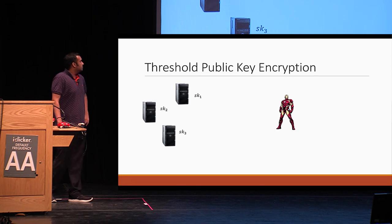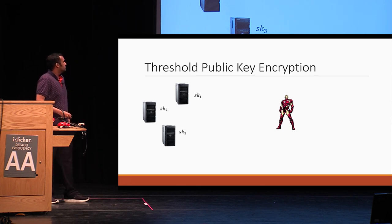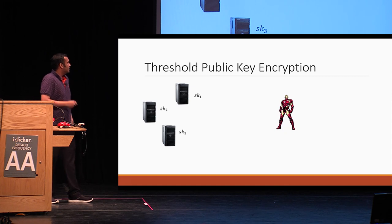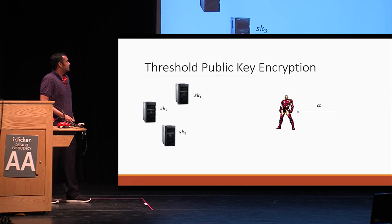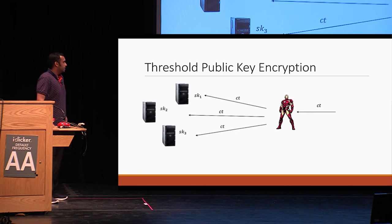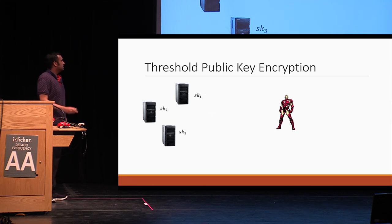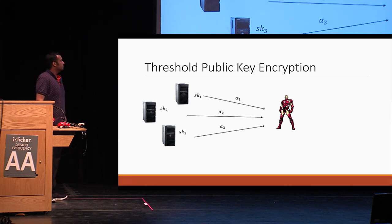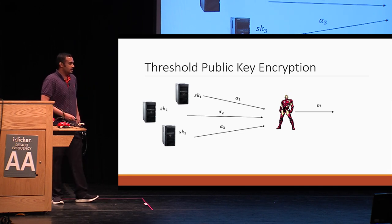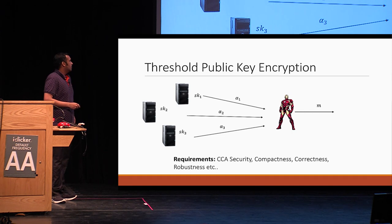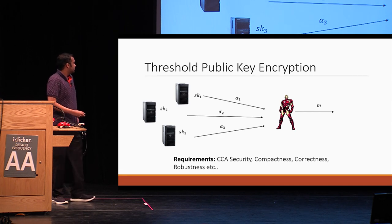Another example is threshold public key encryption. Here, let's say that Tony has secret shared partial decryption keys to the servers and he gets a ciphertext. He should be able to relay the ciphertext to the servers, and then the servers should be able to give out partial decryptions, which he should be able to combine to learn the message. As with all encryption schemes, you might ask for various requirements such as CCA security, compactness, correctness, robustness, and so on.